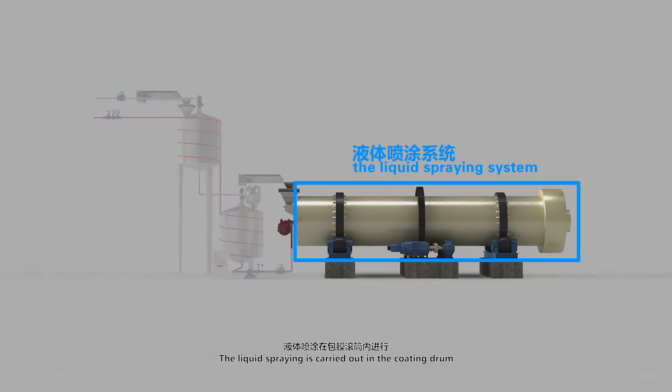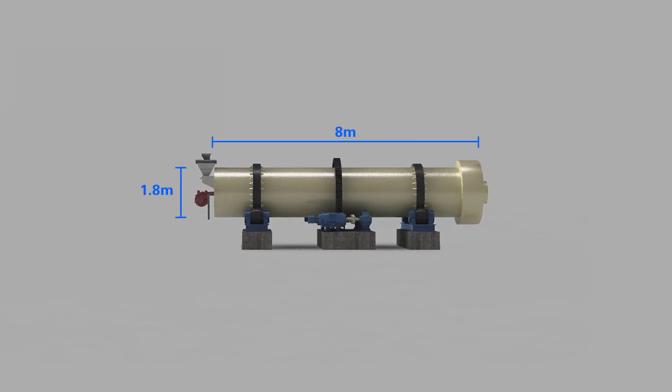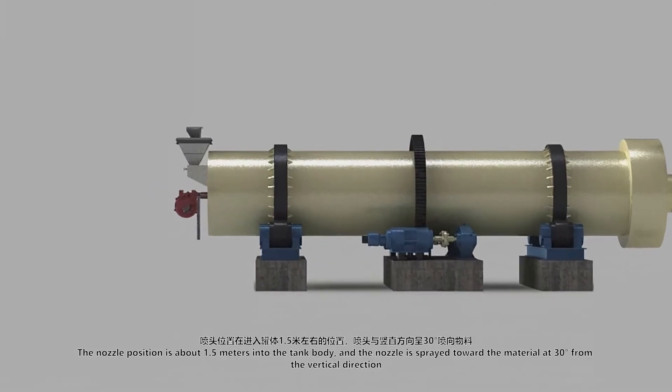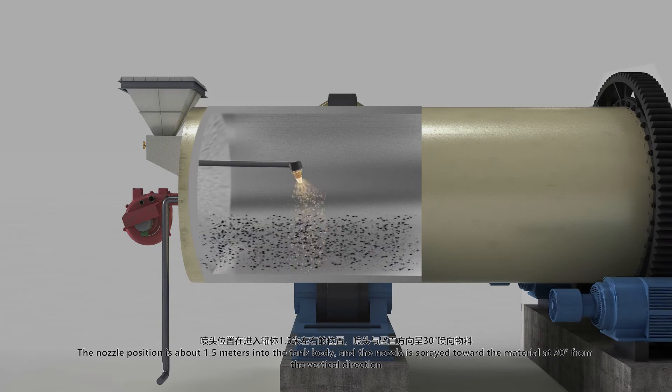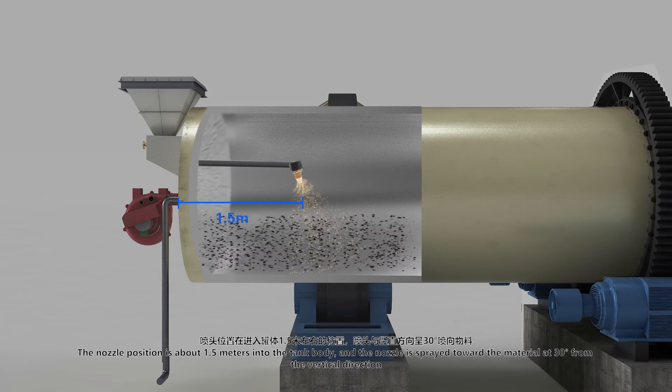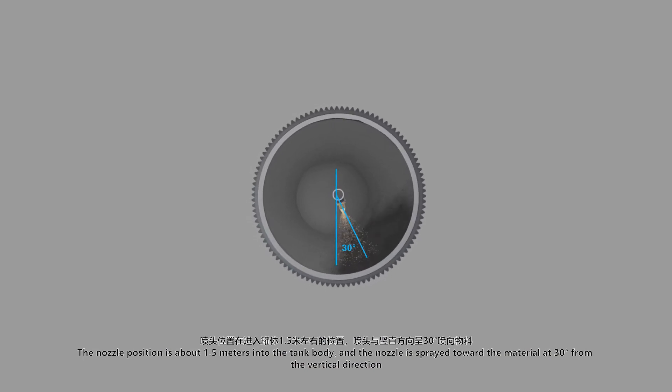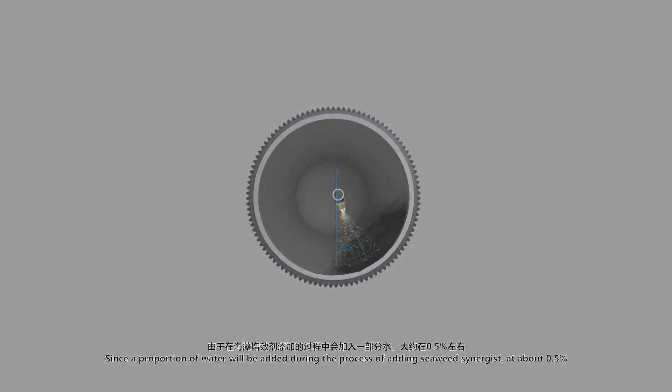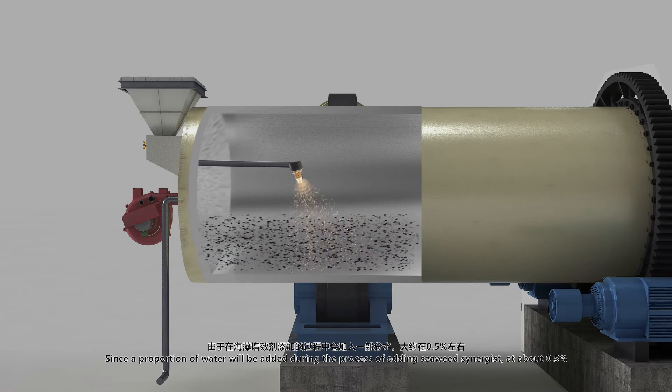The liquid spraying is carried out in the coating drum. The coating drum has a diameter of 1.8 meters and a length of 8 meters. The nozzle position is about 1.5 meters into the tank body, and the nozzle is spread toward the material at 30 degrees from the vertical direction. Since the proportion of water will be added during the process of adding seaweed synergist at about 0.5%.